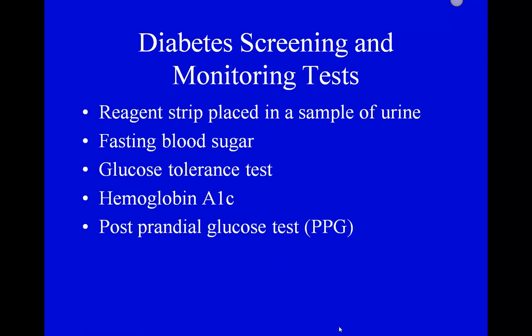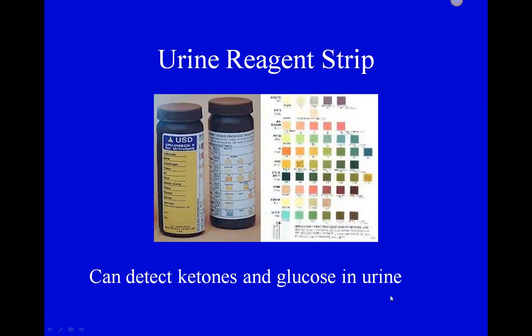To test for diabetes: we can look for symptoms, use a reagent strip, or do a fasting blood sugar test. A glucose tolerance test is the most common test for gestational diabetes. The hemoglobin A1c test was primarily used to monitor diabetic patients' compliance and is now also used as a screening test. A postprandial glucose test — after a meal — is another option.